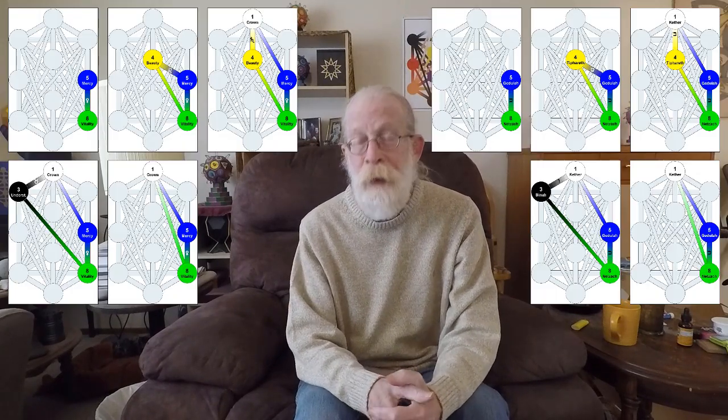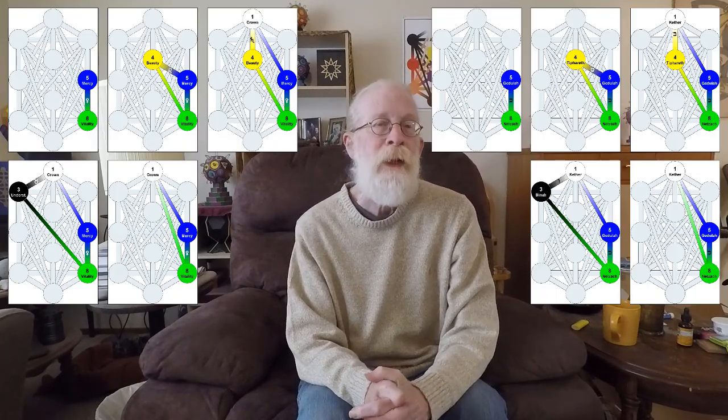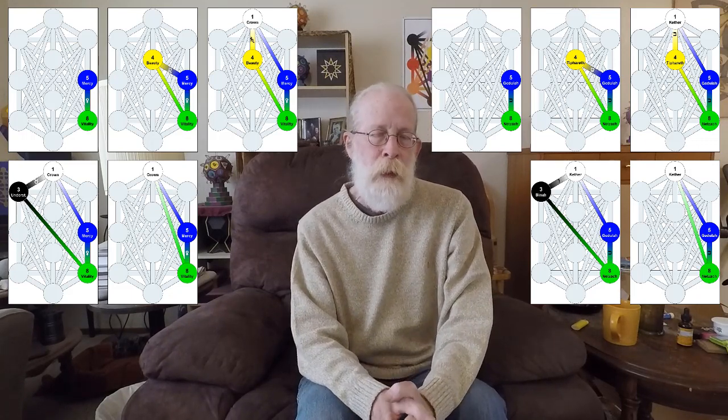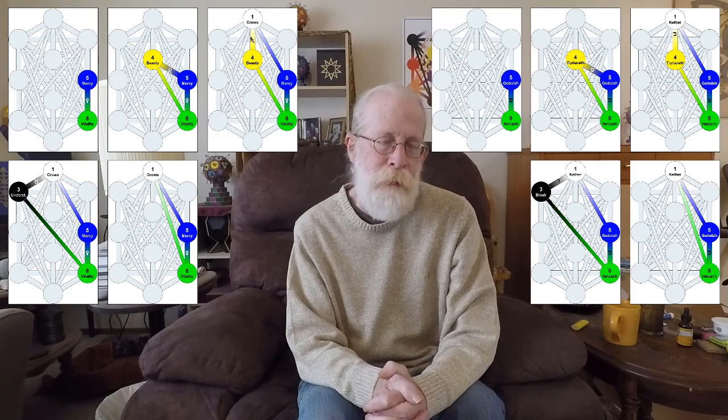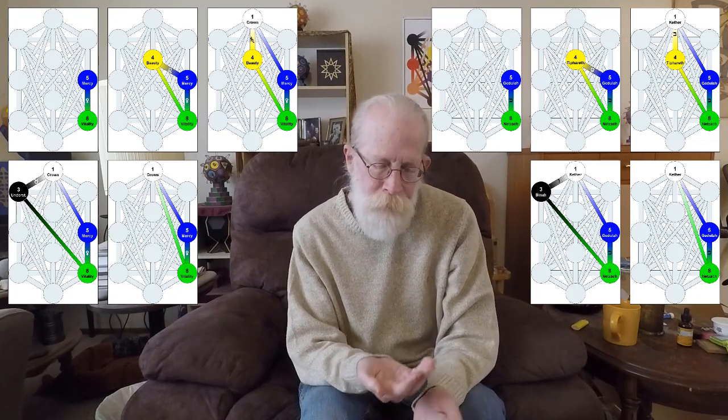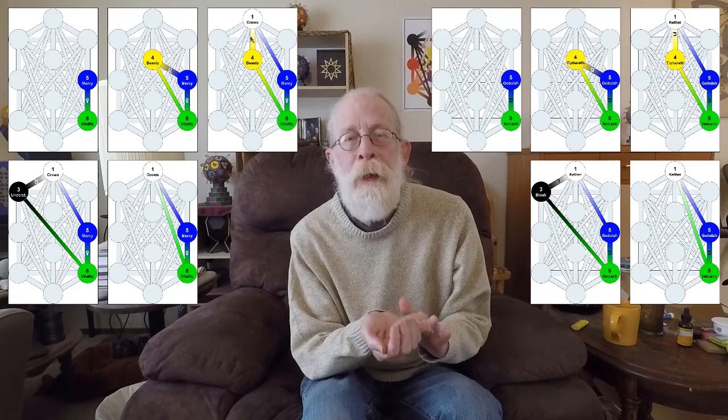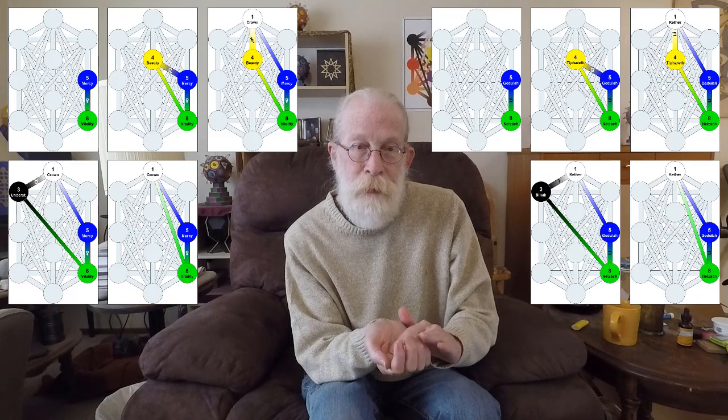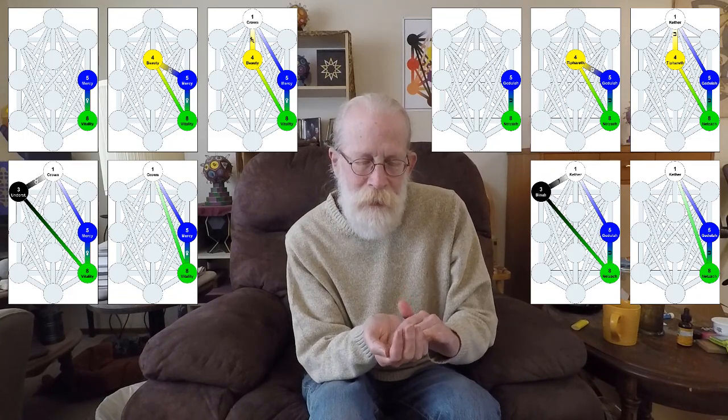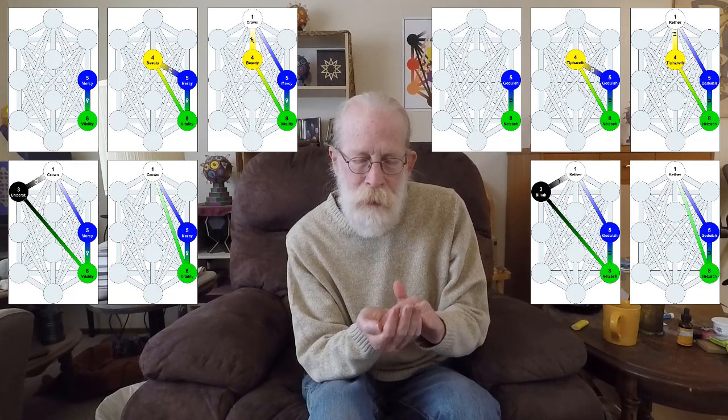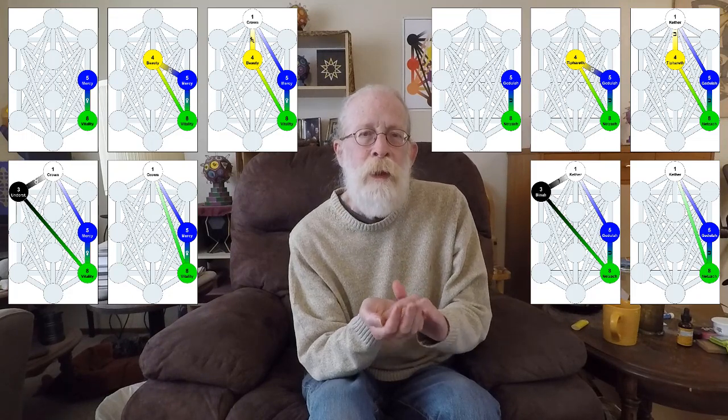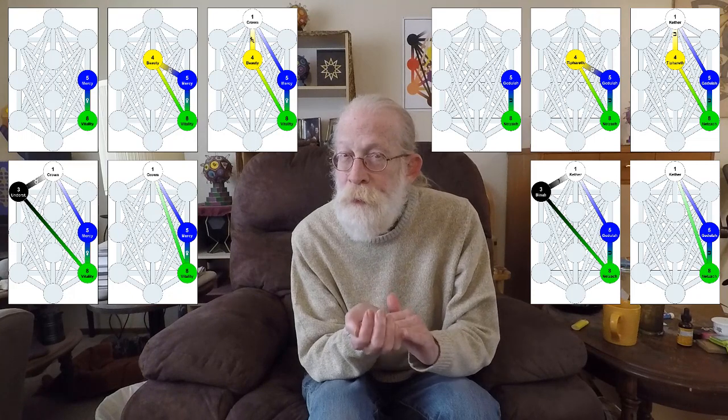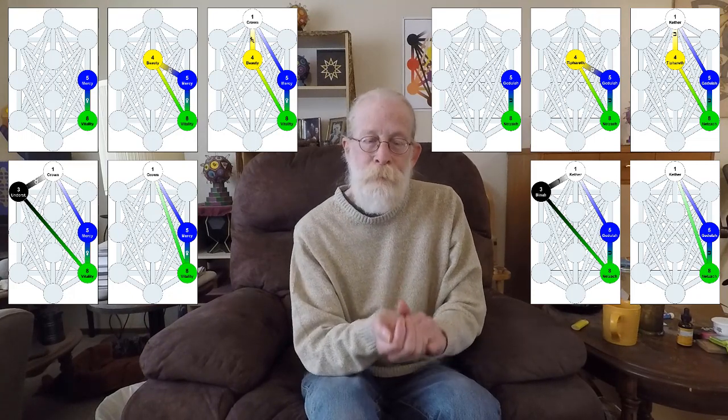Today I come with five more gates of Netzach. These are all the gates of Kaf, the path of Venus. Kaf means the palm of the hand. In fact, it looks like a cupped hand, so there is a sense of gift-giving, safety, and protection.